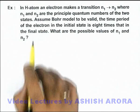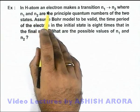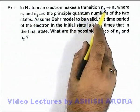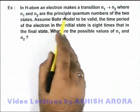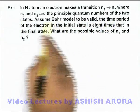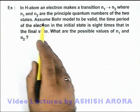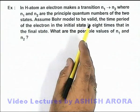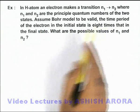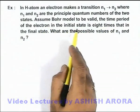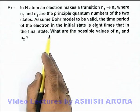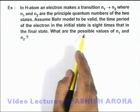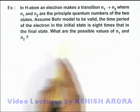In this example, we are given that in a hydrogen atom an electron makes a transition from n1 to n2 state, where n1 and n2 are the principal quantum numbers of the two states. If we assume Bohr model to be valid, it is given that the time period of the electron in the initial state is 8 times that in the final state. Here we are required to find what are the possible values of n1 and n2.